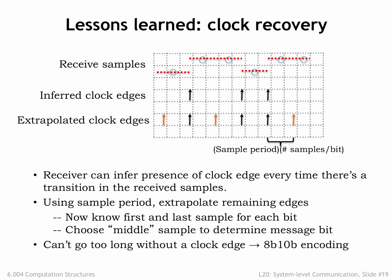The trick, invented by IBM, is for the transmitter to take the stream of message bits and re-encode them into a bitstream that is guaranteed to have transitions no matter what the message bits are. The most commonly used encoding is 8B10B, where 8 message bits are encoded into 10 transmitted bits, with the encoding guaranteeing a transition at least every 6 bit times.